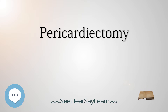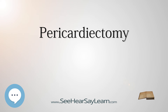When the portion of pericardium lying between the two phrenic nerves is excised, it is called total pericardiectomy. In cases where total pericardiectomy is not possible, subtotal pericardiectomy is performed, or in extreme cases, a cruciate incision on the pericardium is performed.